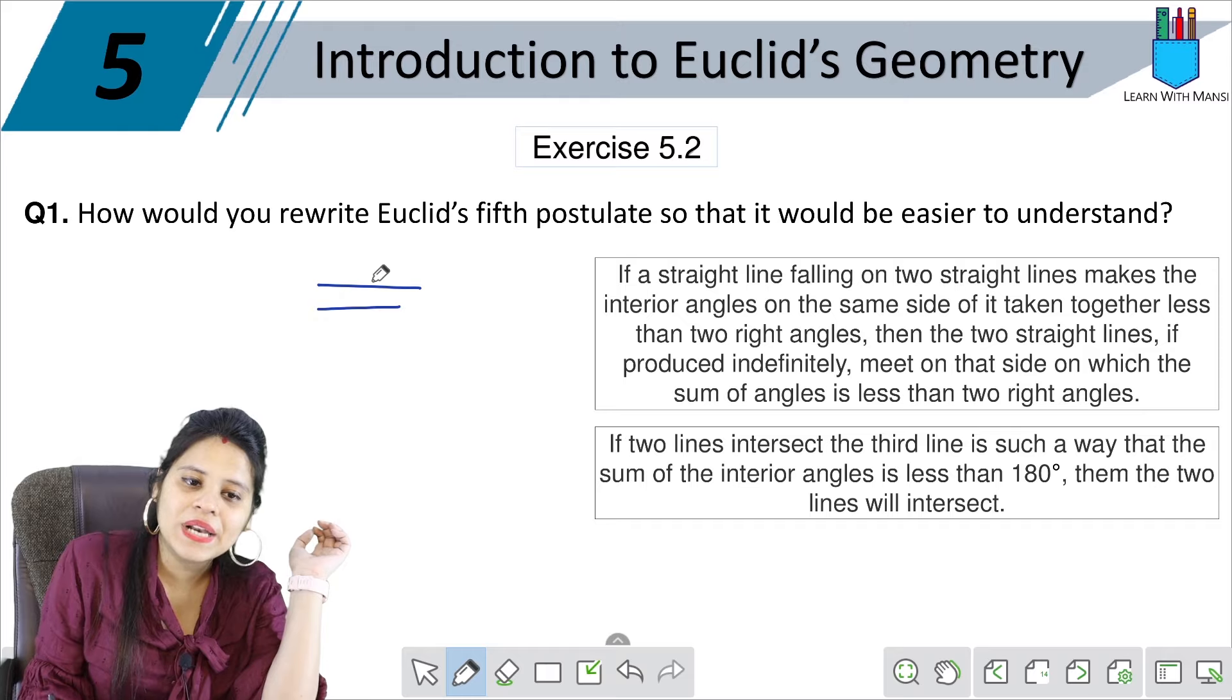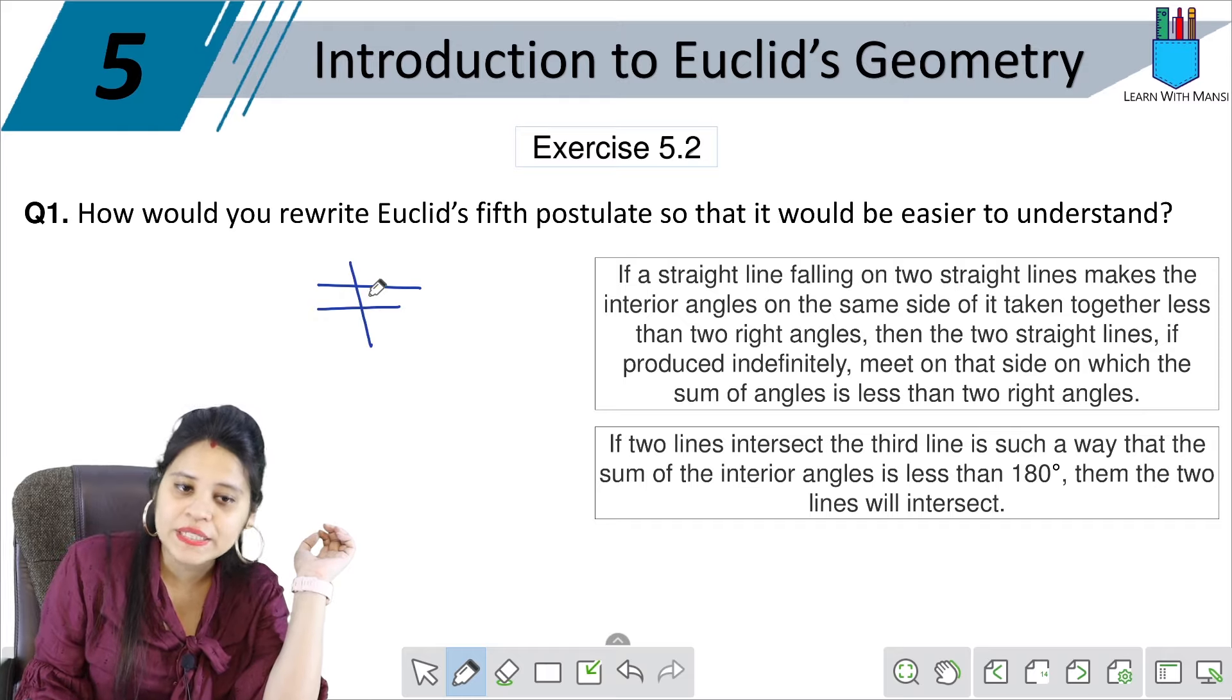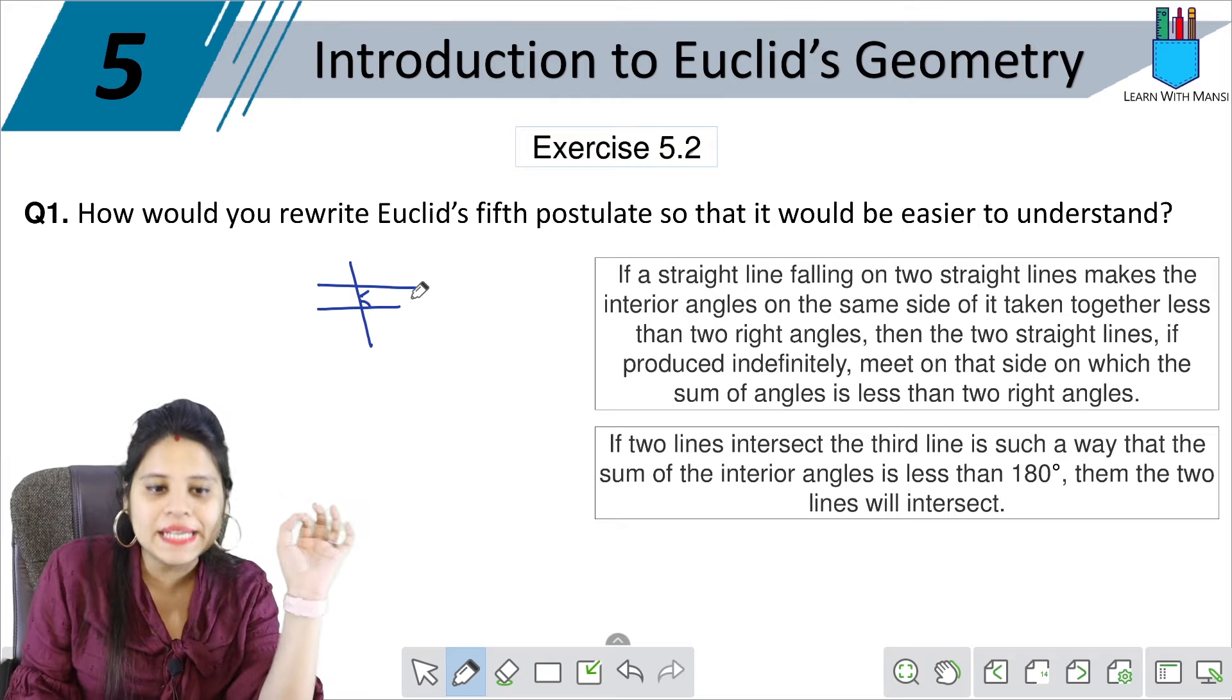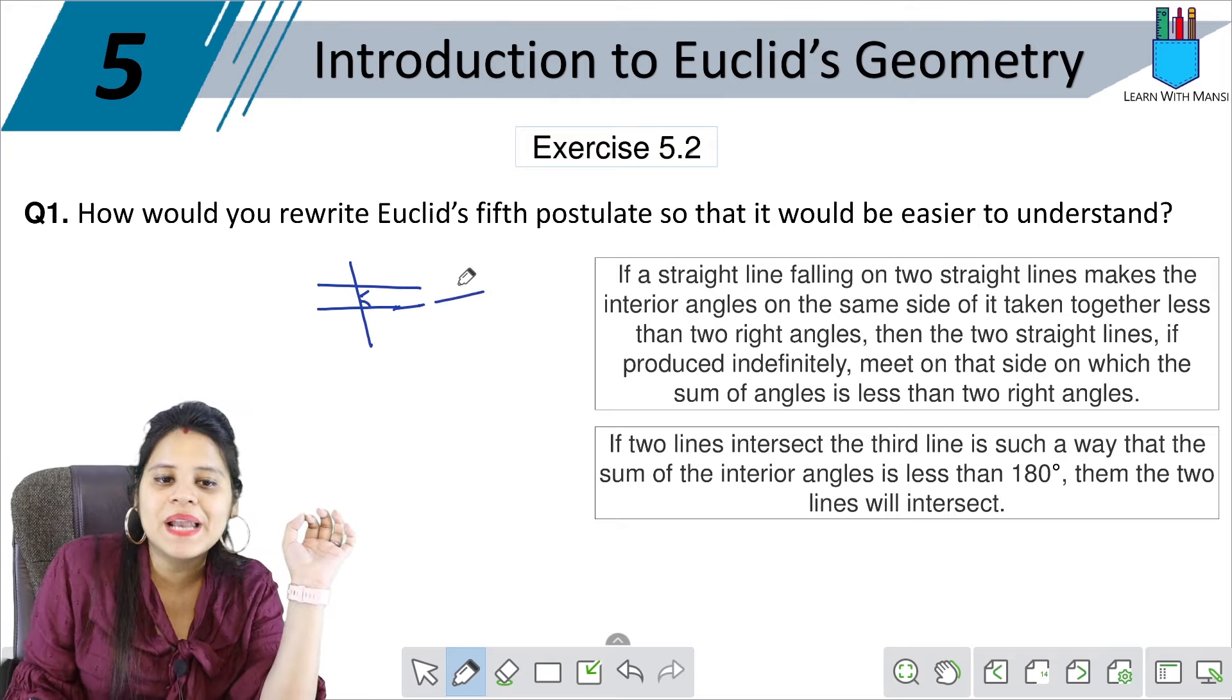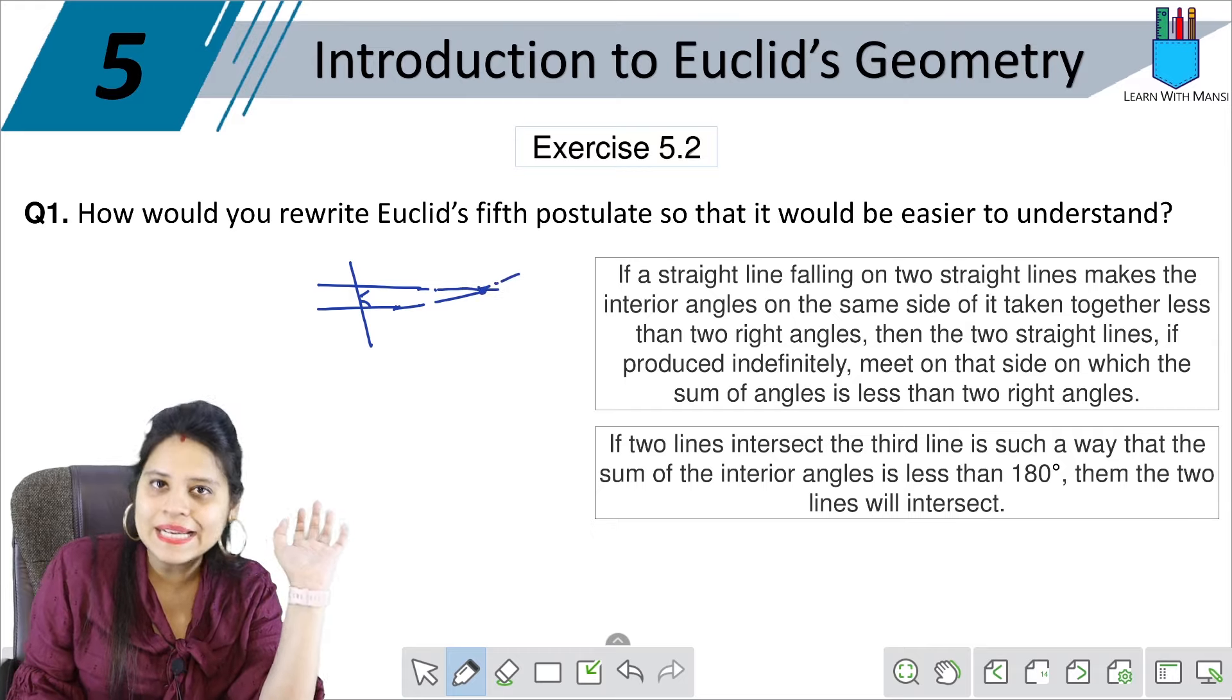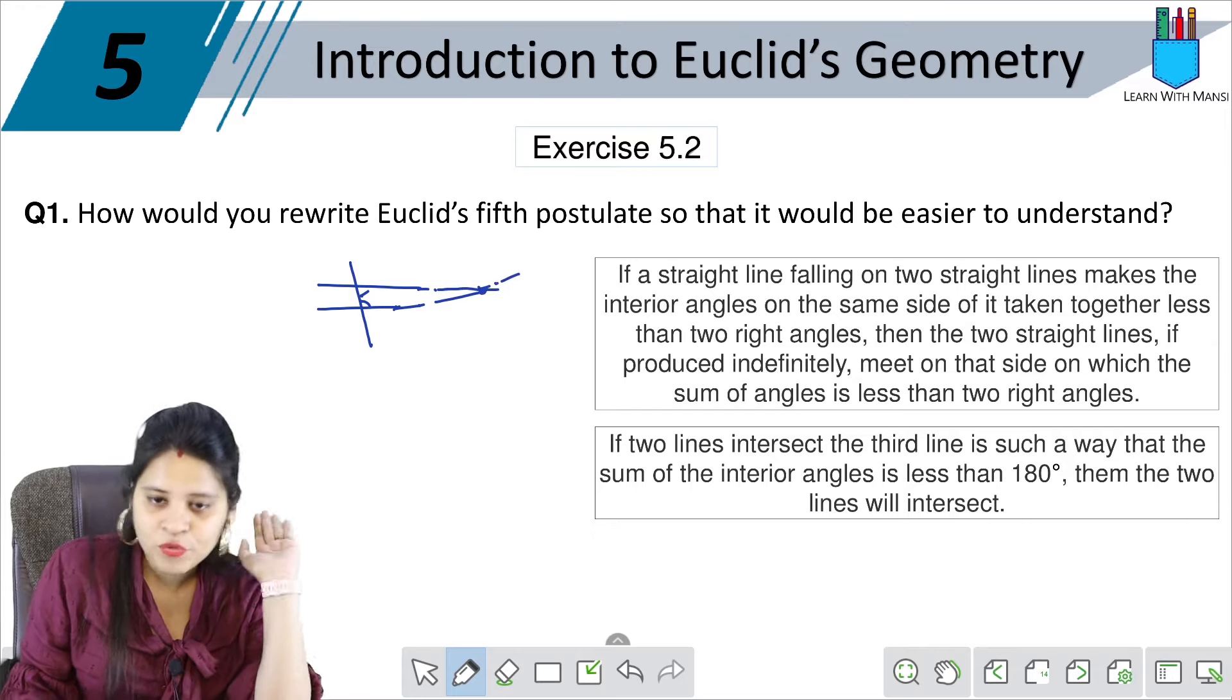If there are two lines and a straight line falls, and there is less than two interior angles, when you extend the lines, you will intersect the lines at any point. This was our 5th postulate.